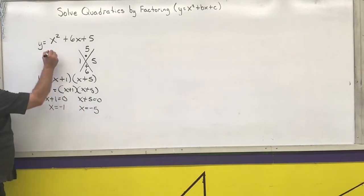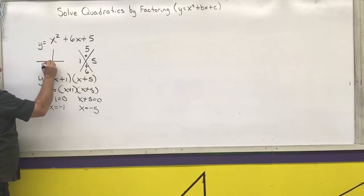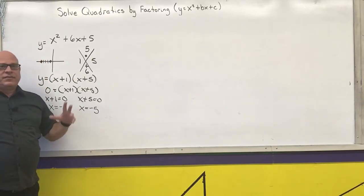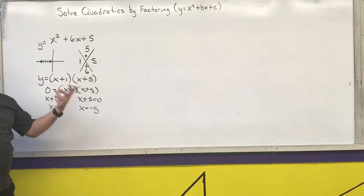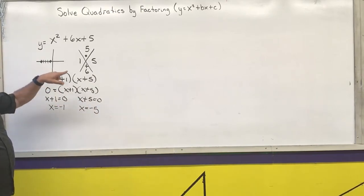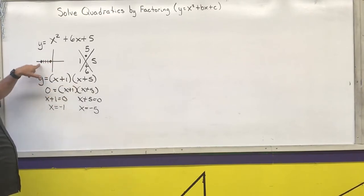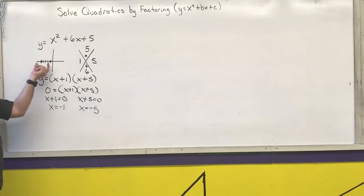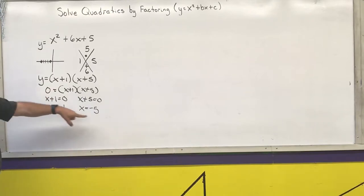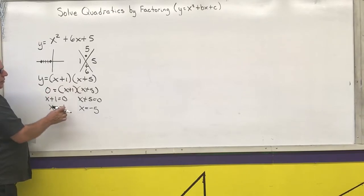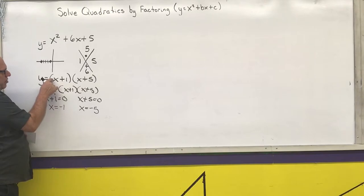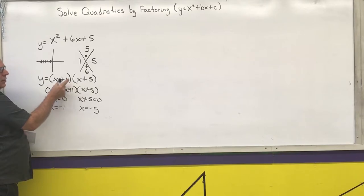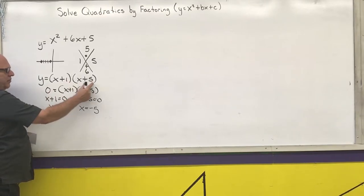Remember, the solutions are the x-intercepts — so there are x-intercepts at negative 1 and at negative 5. If x plus 1 is a factor, then negative 1 is a zero. If there is no coefficient in front of the x, your zeros are just the opposite of whatever is inside the parentheses. The opposite of 1 is negative 1, and the opposite of 5 is negative 5.